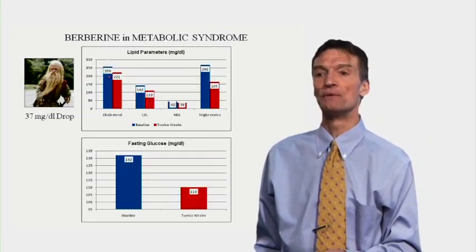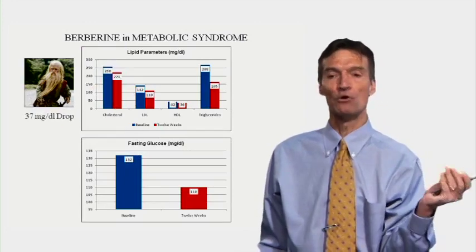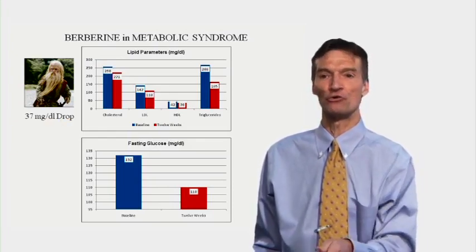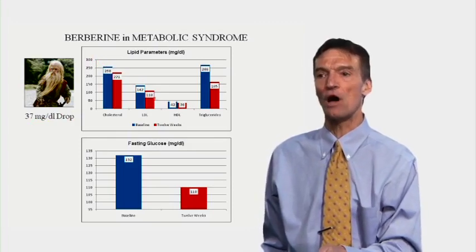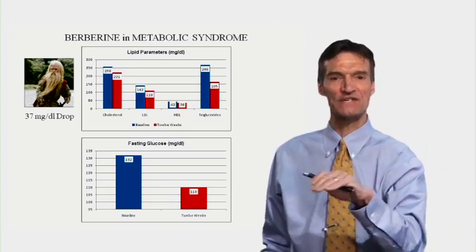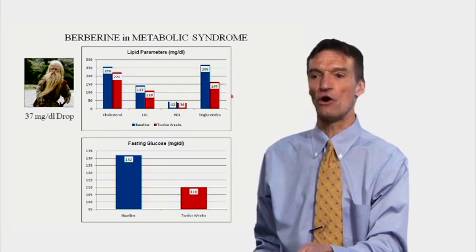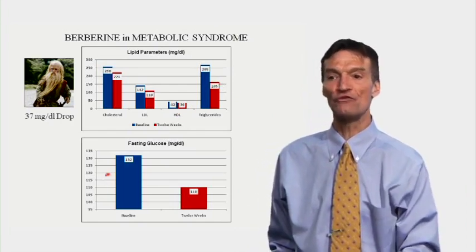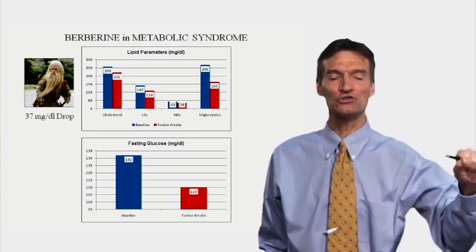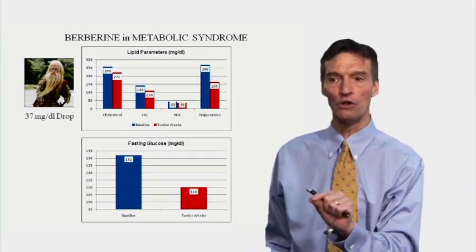Lipids dropped: a 37-point drop in cholesterol — that's the 20% cutoff, decreasing your risk of an event by 20% if we get you down by 38 points. Cholesterol drops, LDL drops, HDL drops a little bit. The only negative effect of berberine is it tends to drop the HDL, but HDL as a percentage of total cholesterol will rise. Triglycerides fell nicely. Fasting glucose fell from 132 to 110 — a 22-point drop. We're lowering cholesterol, lowering triglycerides, lowering LDL, and lowering blood sugar.